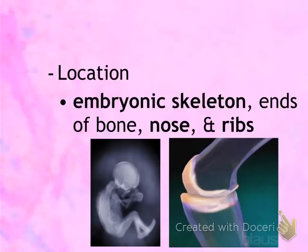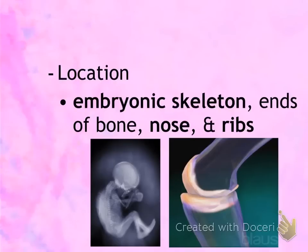Locations of hyaline cartilage include the embryonic skeleton. Before babies are born, their skeleton is not bone yet but is made up of cartilage, and as they mature and grow, the cartilage is turned into bone. Hyaline cartilage is also found at the ends of bones and in places like the nose and the ends of the front portion of the ribs.